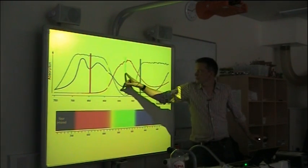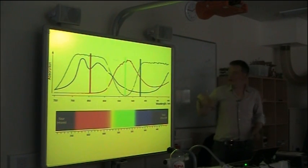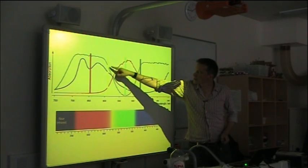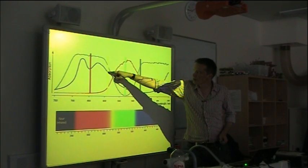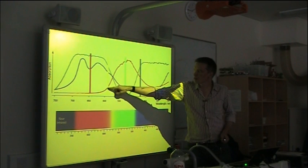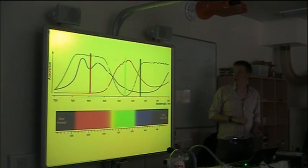We can do the same thing. Here's the yellow, here's the green. The yellow light is absorbed by the green, it's absorbed by the blue very well, but it's not absorbed by the yellow or the red.